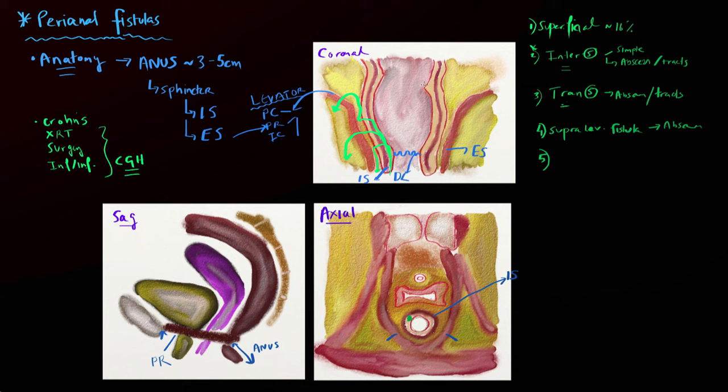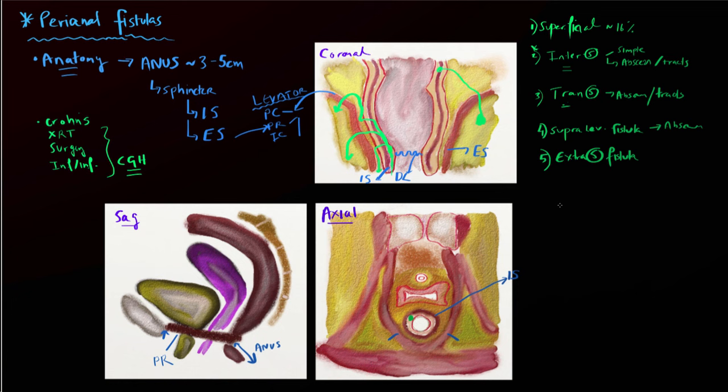The last type is a little different — the extra-sphincteric fistulas — and with these the cryptoglandular hypothesis doesn't quite hold true. These have nothing to do with the anus or the sphincter mechanism. They arise higher up, probably in the rectum or sigmoid colon, and then go through the adjacent parapelvic fat pad. They can go through the levator musculature and form abscesses. This fifth type of fistula doesn't have a good explanation in terms of the cryptoglandular hypothesis.